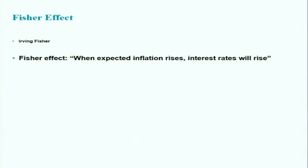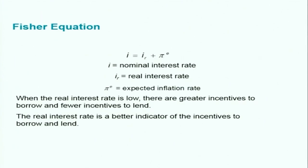Before summarizing, let me also give you the Fisher effect: when expected inflation rises, interest rates also rise. The Fisher equation is: i (nominal interest rate) = real interest rate + expected inflation rate. When the real interest rate is low, there are greater incentives to borrow and fewer incentives to lend. The real interest rate is therefore a better indicator of the incentive to borrow and lend. In the next session we will discuss an alternative framework for determining the rate of interest in the market — mainly by using the market for money.